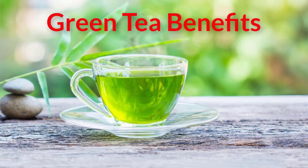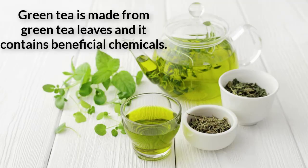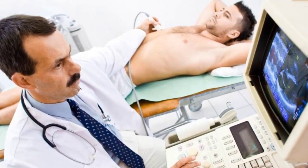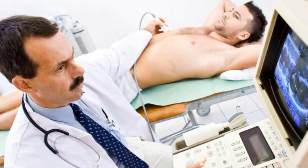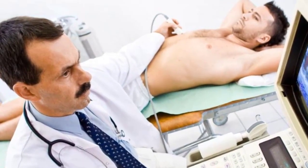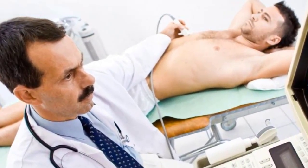Green tea is made from green tea leaves and contains beneficial chemicals. Among them is epigallocatechin-3-gallate, also known as EGCG. It is part of a larger group of compounds called polyphenols, which exert antioxidant effects and can help to protect your cells and tissues from the damage of unstable molecules known as free radicals. Free radicals are atoms with unpaired electrons, which makes them unstable. They go around stealing electrons from healthy cells in an effort to pair with their own electrons, but this damages healthy cells and tissues. Antioxidants find free radicals and pair up with them, which neutralizes them and prevents them from causing damage.